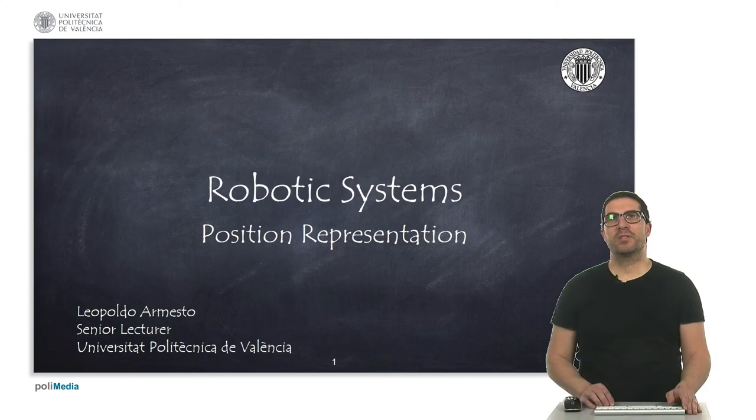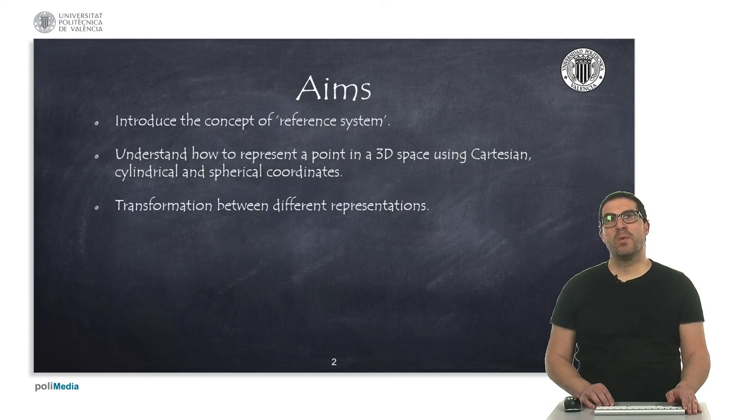Hello, in this video I'm going to explain different ways of representing the position of a point in a 3D space. First, we will understand the concept of a reference system, or frame, since it will be constantly used to relate the position and orientation of robot links in the space.